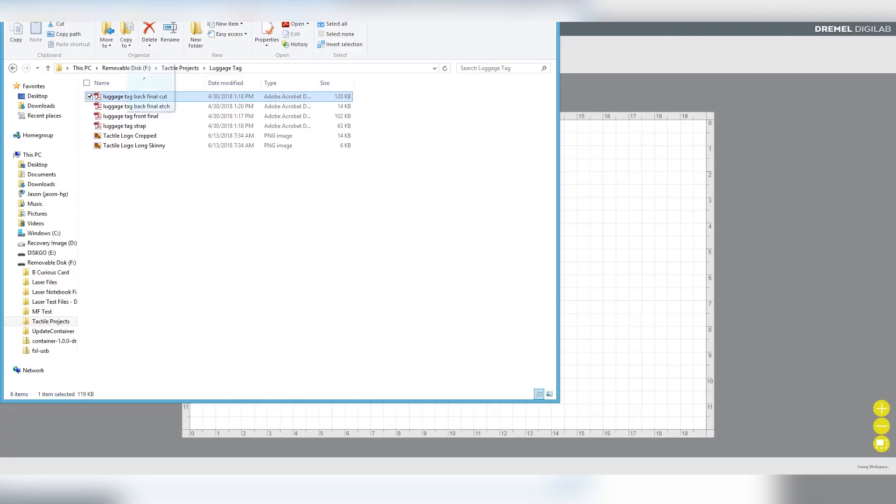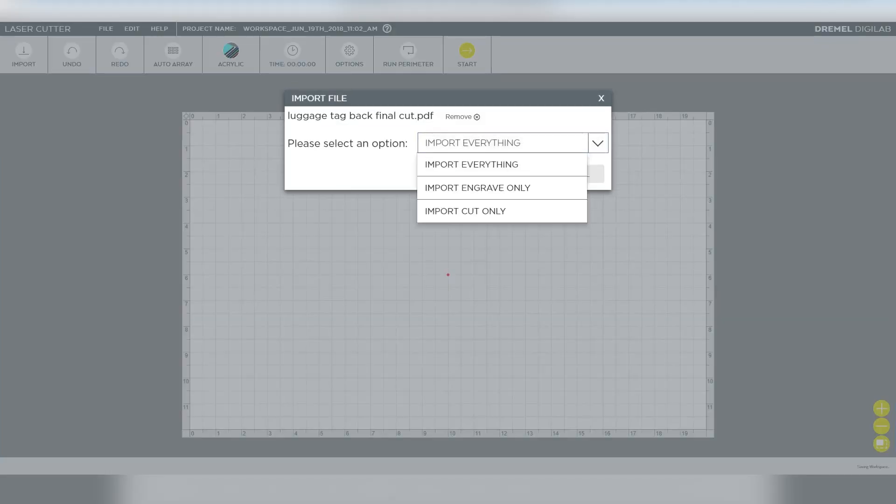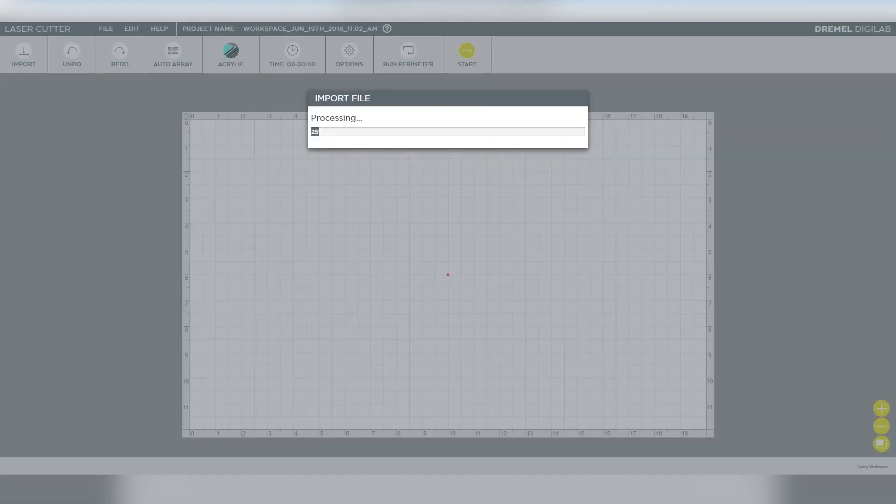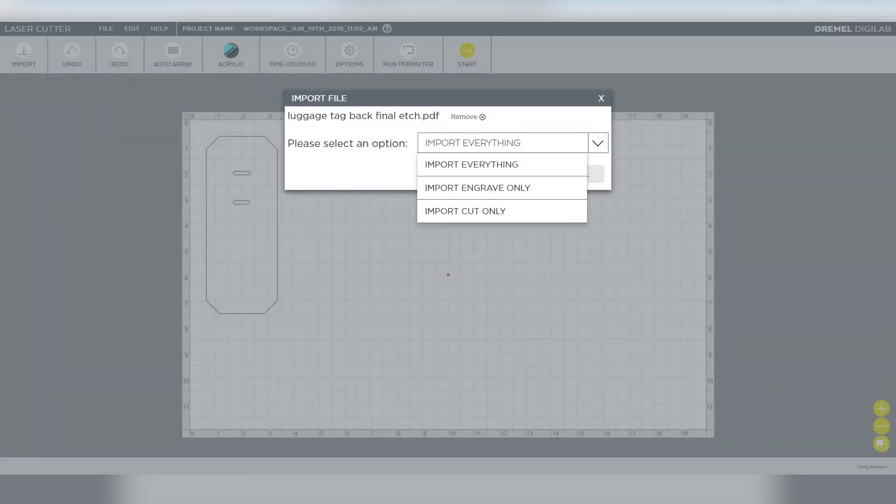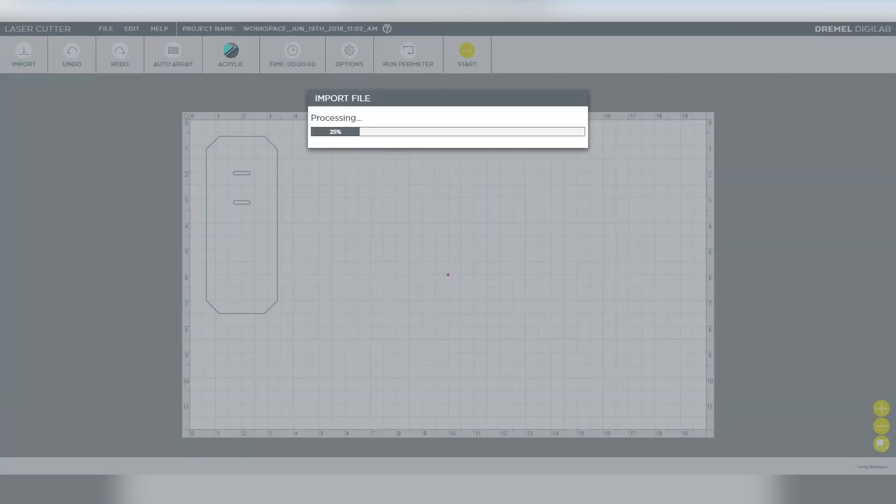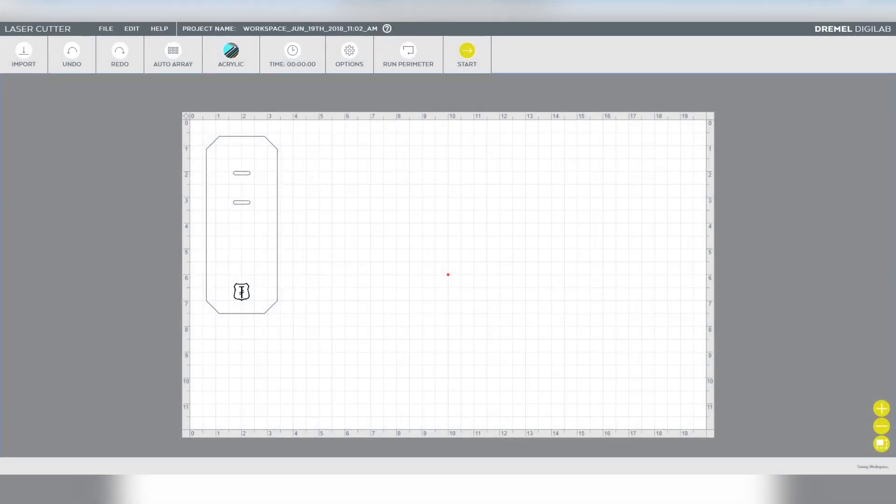Let's go ahead and bring in the luggage tag that you guys are looking to prototype. We'll start with the cut file for the front. We're going to import cut only, and then we're also going to bring in the logo, engrave only. Because we have exported this engraving of your logo from the same workspace, when we import the engrave only, it's going to place that in exactly the right spot.